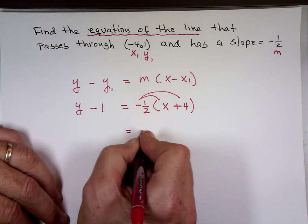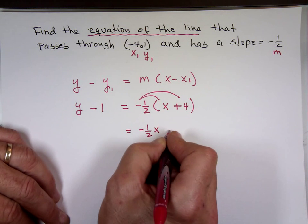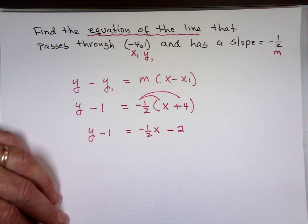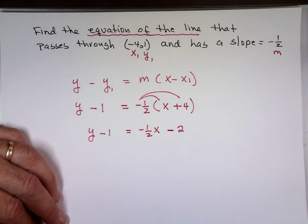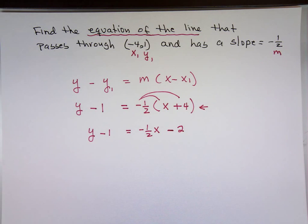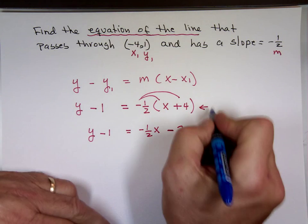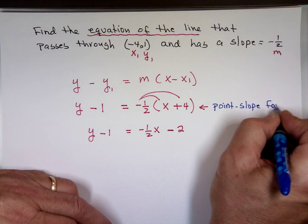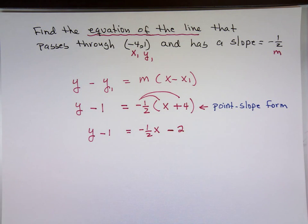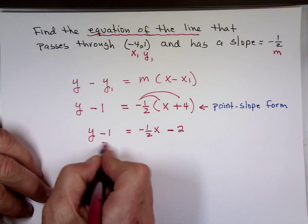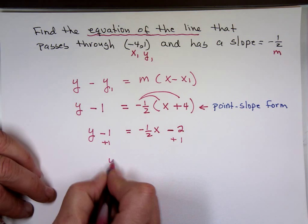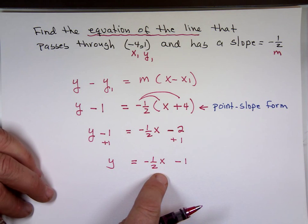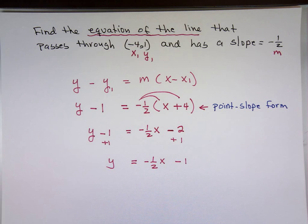Distribute that: negative one-half x minus — what's one-half times 4? That's 2 — equals y minus 1. Now, if they say leave your answer in point-slope form, you stop right here. If you go further and add 1 to both sides, you get y equals negative one-half x minus 1. That is not point-slope form — that's slope-intercept form.